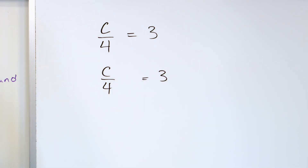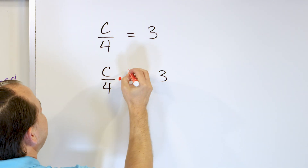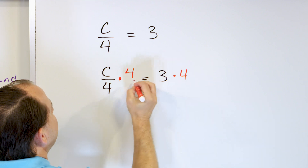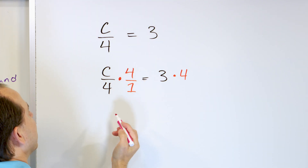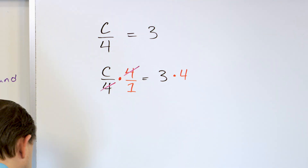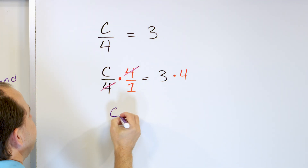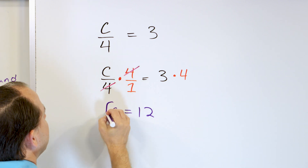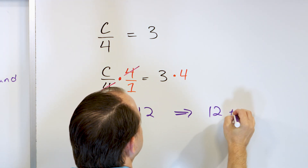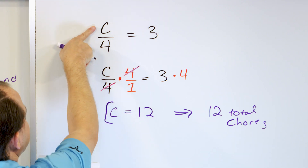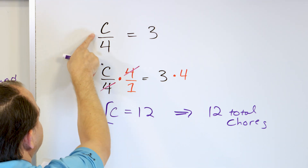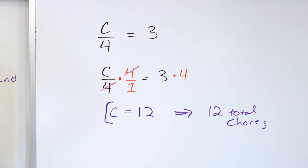On the left-hand side we are doing division, so we have to undo it with multiplication. We'll multiply both sides by four. We write this as a fraction, and we see right away that we have a four in the top and a four in the bottom — we can cancel those. On the left-hand side all we are left with is C, and on the right-hand side three times four is 12. So the answer is 12 total chores. If there are 12 total chores and we divide among four children, 12 divided by four is three — each person does three chores. That's exactly what the problem says, so we know it matches and makes sense.